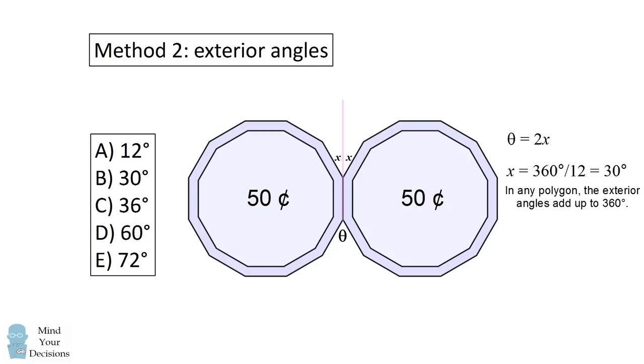So the measure of a single exterior angle will be 360 divided by 12 because a 12-sided coin will have 12 exterior angles. So a single exterior angle is 30 degrees, and that means two times an exterior angle, or theta, will be 60 degrees.